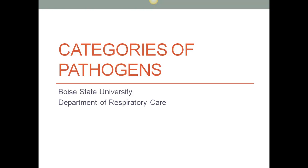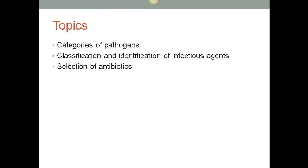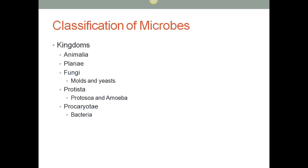Today our recording is going to cover categories of pathogens. Our main topics include the different categories we put organisms in and how we classify them, basically based around how they reproduce and whether or not they have a cell wall. Understanding infectious disease requires a recognition of the relationship between microbes and other living things.